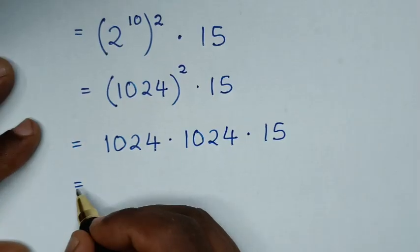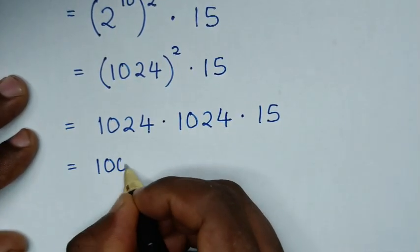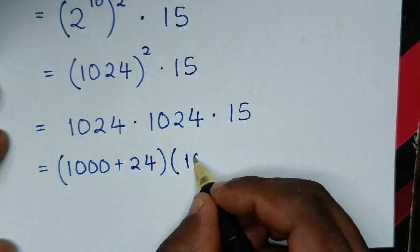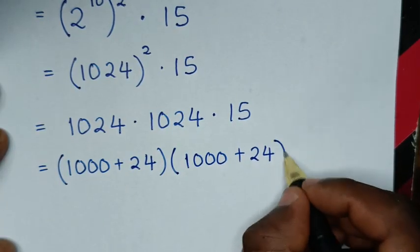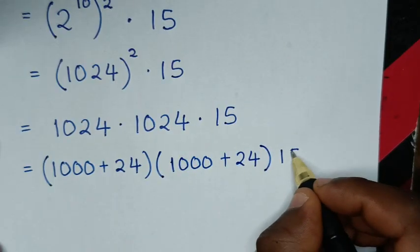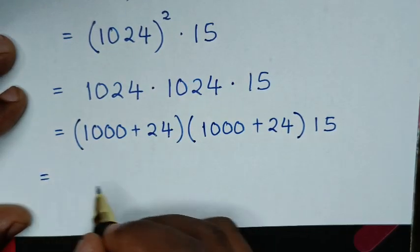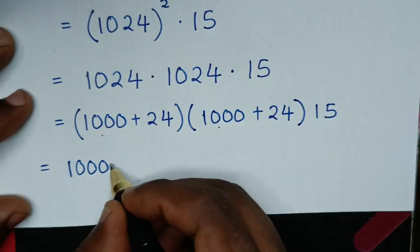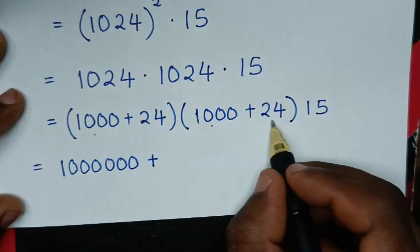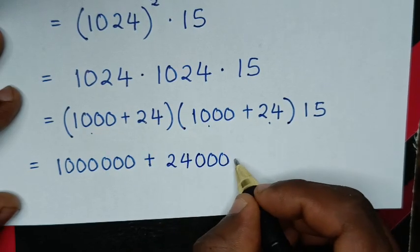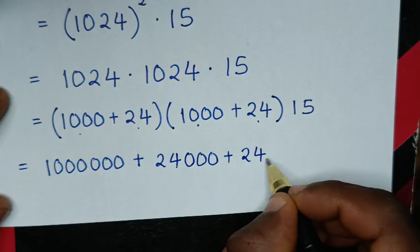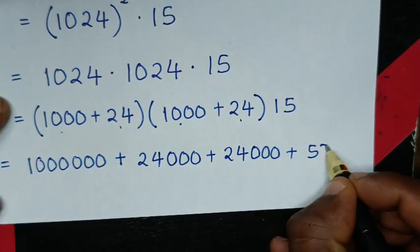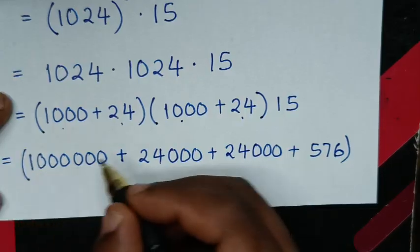It will be equal to: 1024 is the same as 1000 plus 24, bracket, times 1000 plus 24, bracket, times 15. We multiply this times this: 1000 times 1000 is 1 with 6 zeros, so 1 million. Plus 1000 times 24 is 24,000. Plus 24 times 1000 is 24,000. Plus 24 times 24 is 576, times 15.